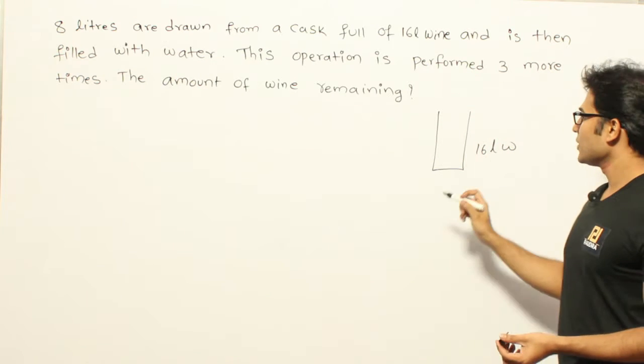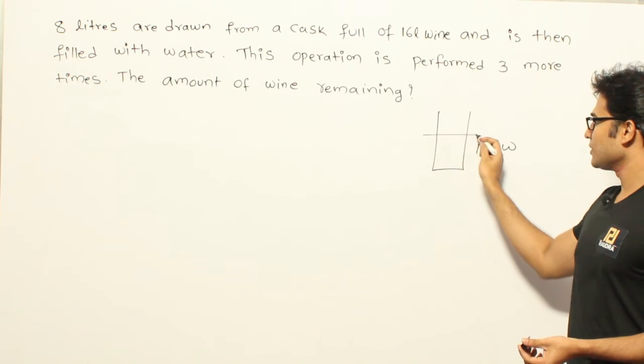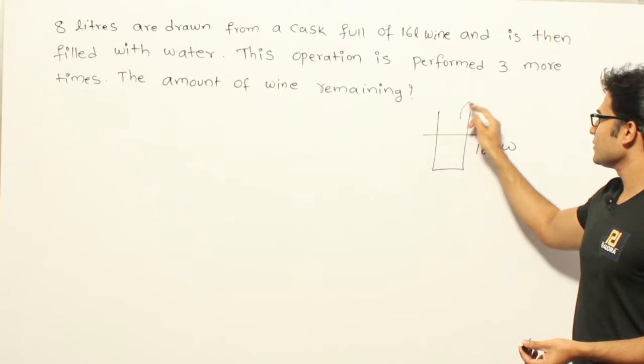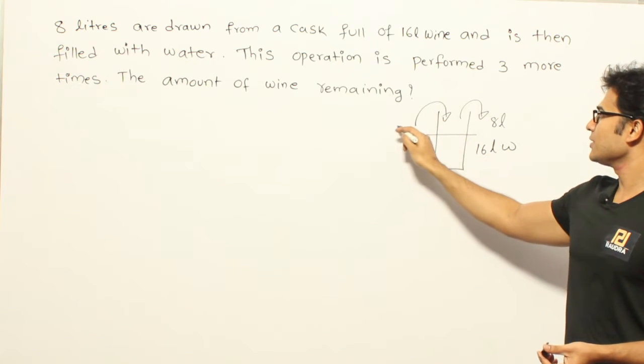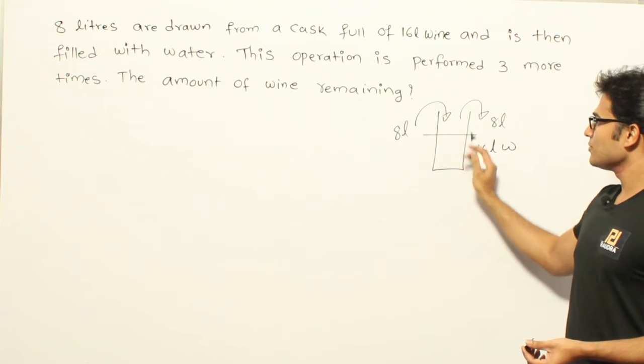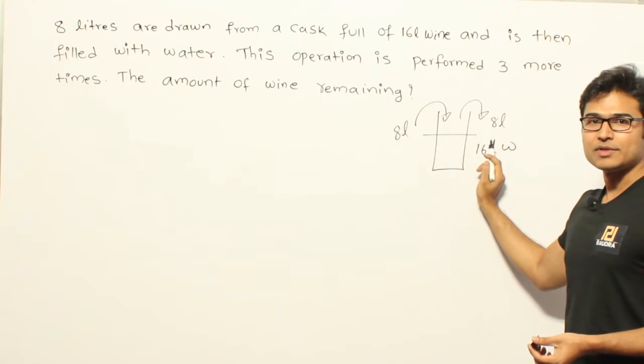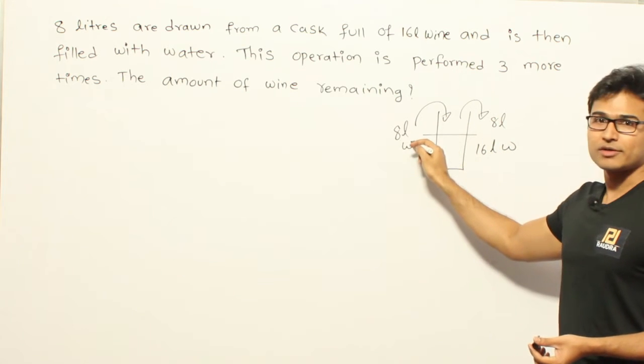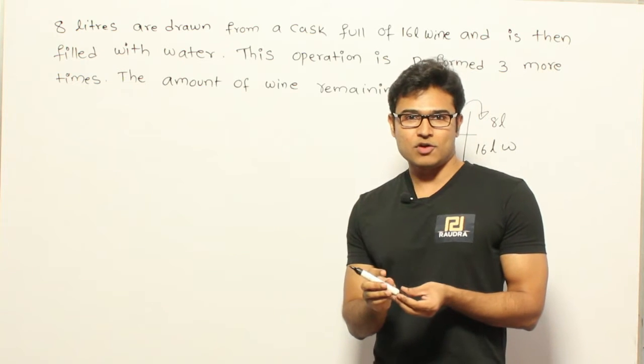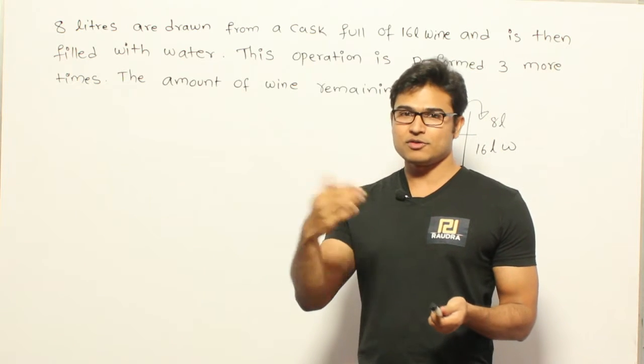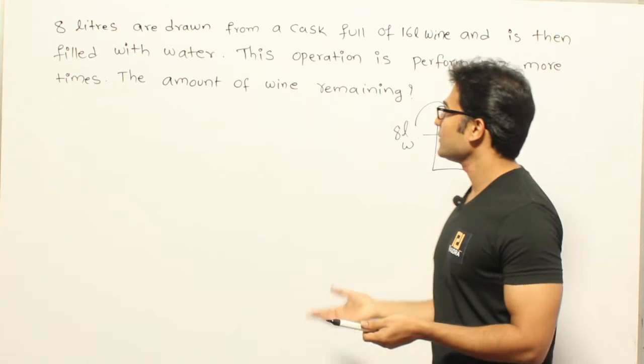And now every time what they are trying to do is they will replace, they will pull out 8 liters of this and then they will pour in 8 liters of water. And after you get the mixture, again they will pull out 8 liters of the mixture and again add 8 liters of water. So this is how they are replacing the mixture, initially the wine with water and later the mixtures which you are getting with water.